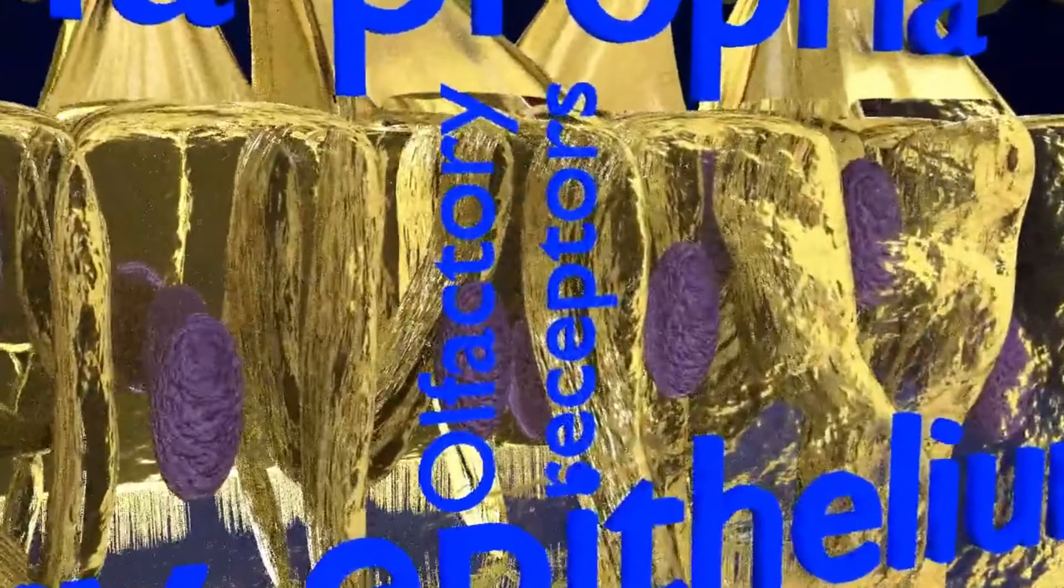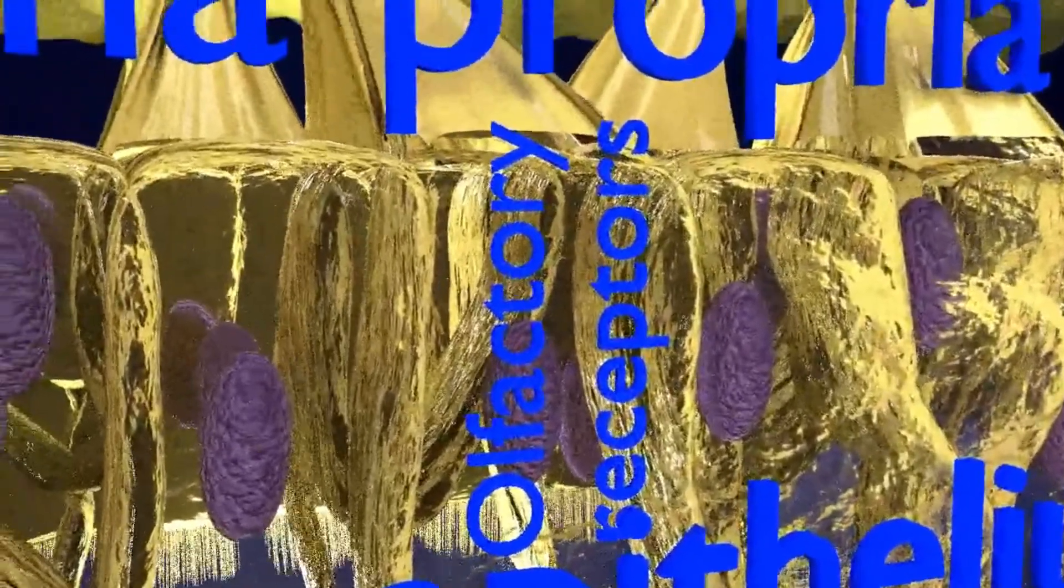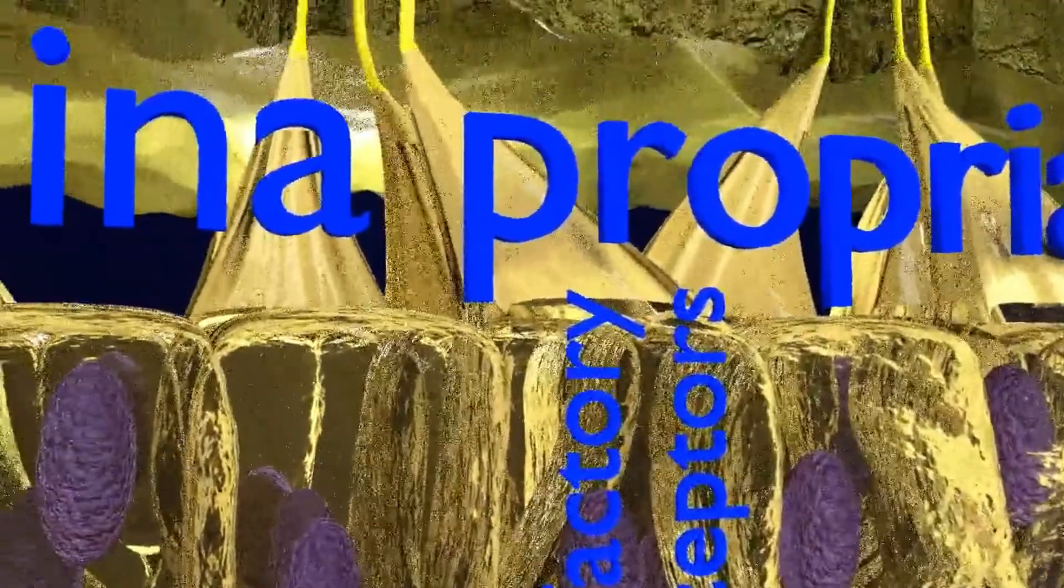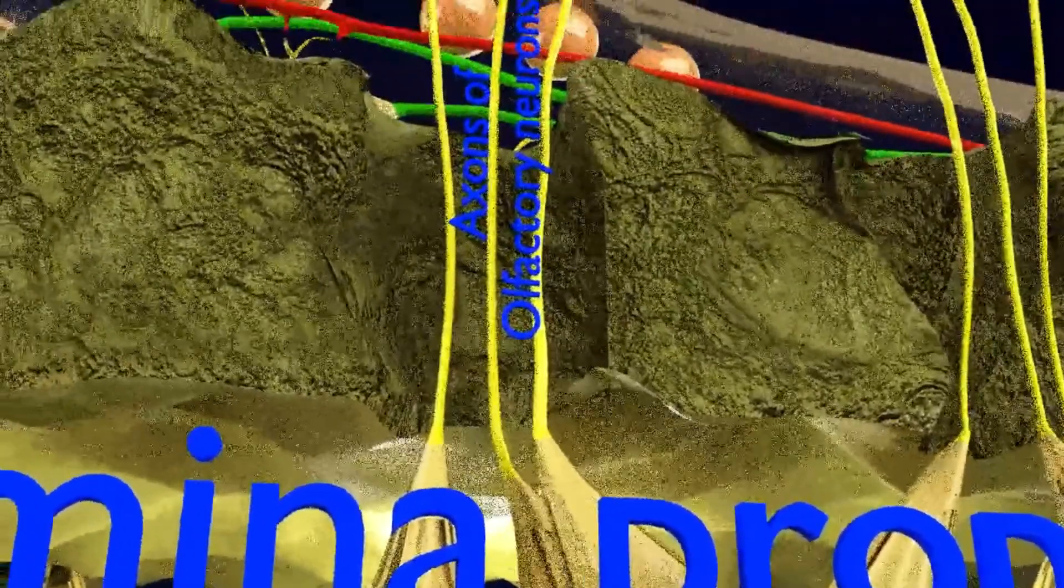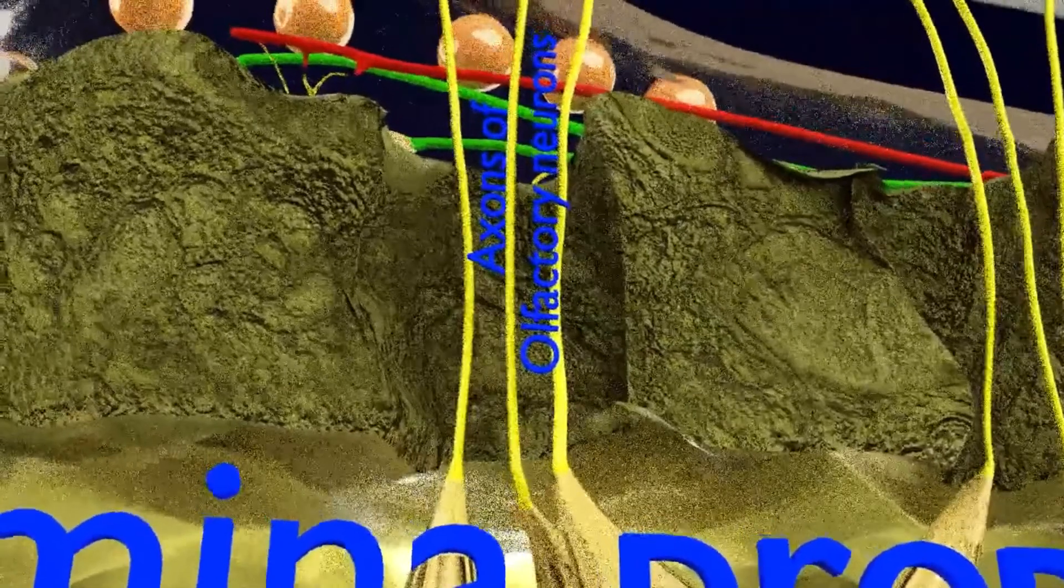This generates an action potential in the olfactory receptors which travels to the olfactory bulb through axons of the olfactory receptors. These axons form the olfactory nerve.